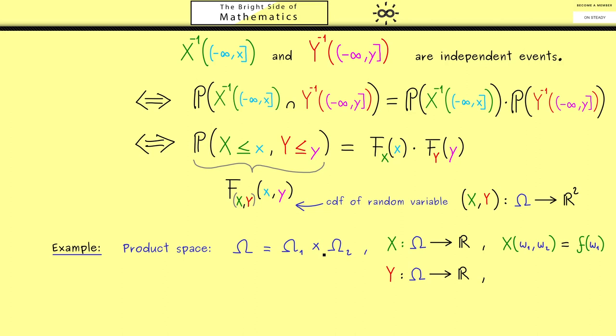So maybe here just think of a simple example when you throw two dice. Then omega_1 represents the first die, so we have the numbers 1 to 6, and omega_2 represents the second die. In this case, X could be the random variable that looks at the outcome of the first die. Which means X of omega_1, omega_2 is simply just omega_1.